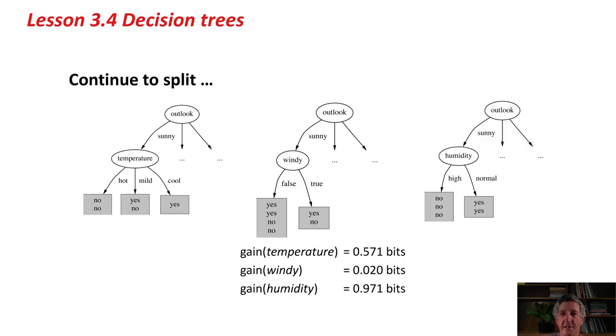In this case, it's Humidity with a gain of 0.971 bits, because you can see that if we branch on Humidity around here, then we get pure nodes, three no's in one, and two yes's in another. When we get that, we don't need to split any more. We're again on a quest for purity. That's how it works. It just carries on until it reaches the end, until it has pure nodes.